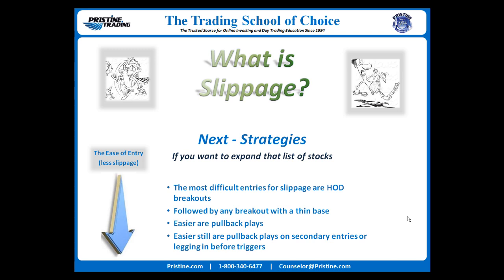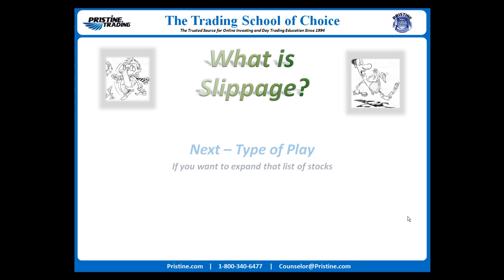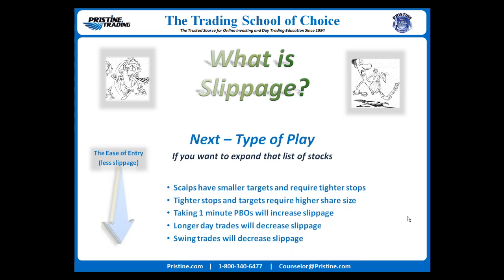Pullback type of entries are generally easier entries and they allow alternate entries that could eliminate slippage totally, such as legging into positions or using secondary signs of strength. The time frames you are playing will also matter. Scalp trades typically have smaller targets which require tighter stops, which require higher share size to make more money, and this increased share size will increase the chance for slippage. Taking longer-term day trades will have the reverse effect and decrease the chance for slippage.